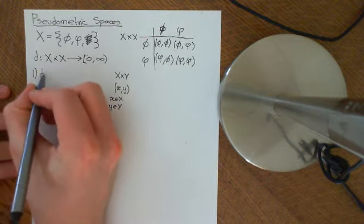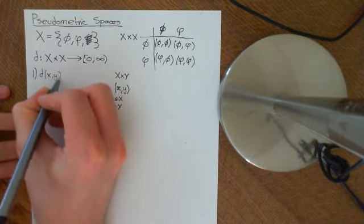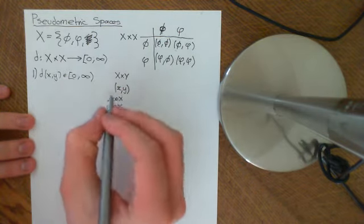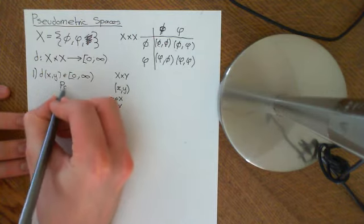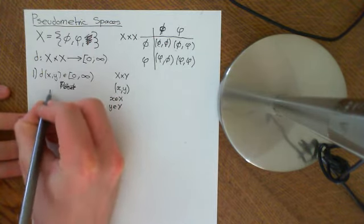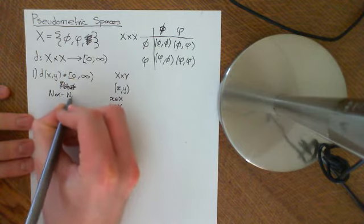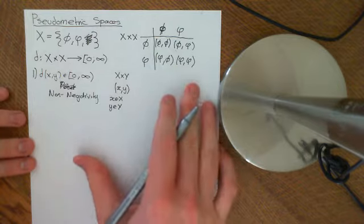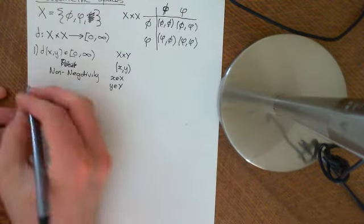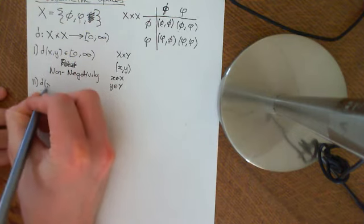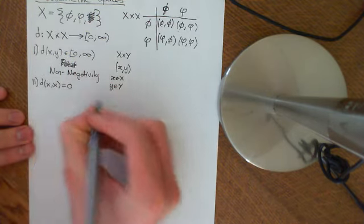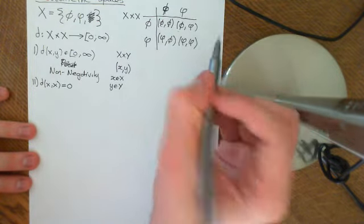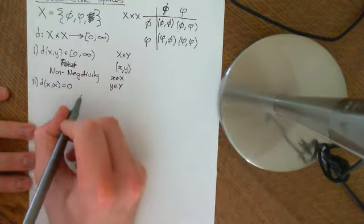The first axiom holds true: the distance between any two elements X and Y is a non-negative real number. This property is called non-negativity. The second axiom is that the distance between an element and itself is equal to zero, so all diagonal terms are mapped onto zero. This still holds true in a pseudometric space.